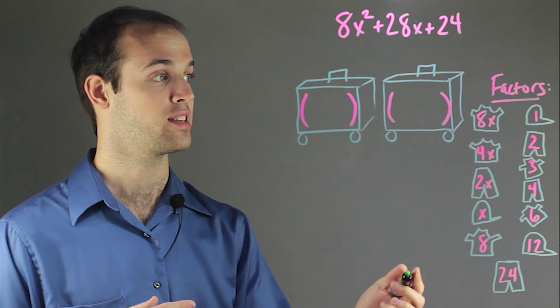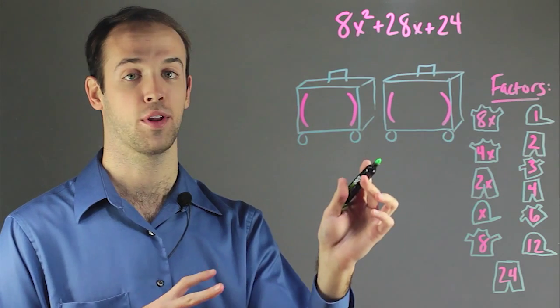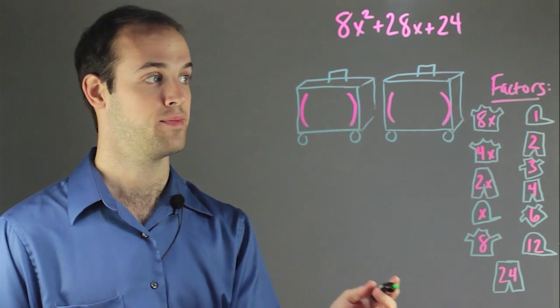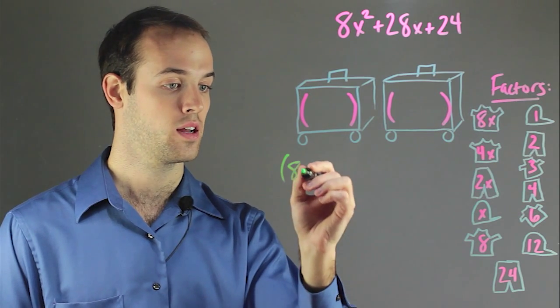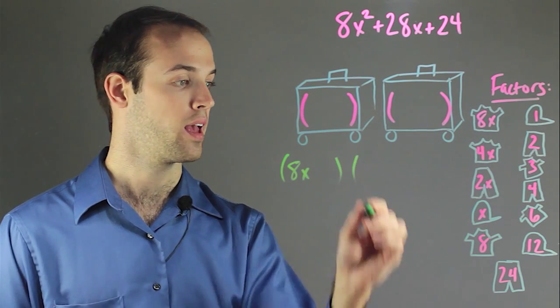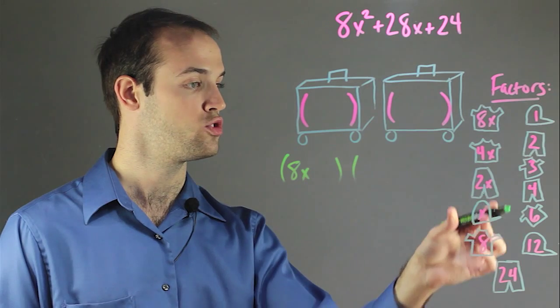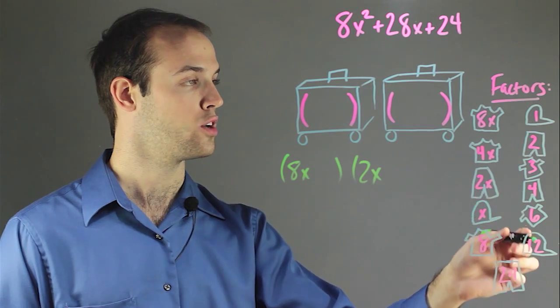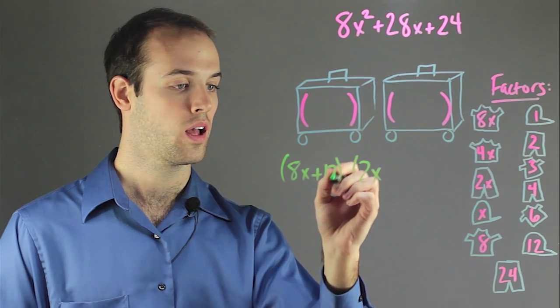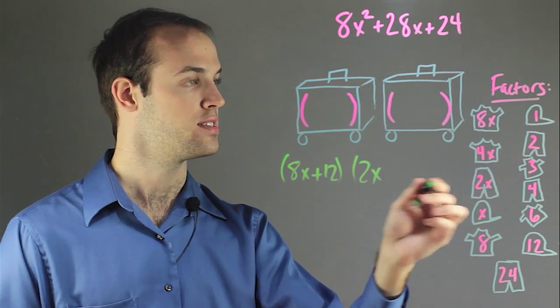So let's start putting things in our suitcases. But I don't want to put them in yet because I'm not sure they're going to be right. So the first thing I'm going to try, I'm going to grab this 8x over here, and I'll grab this 2x down here for the pants. And over here, I'll grab a 12 and a 6.